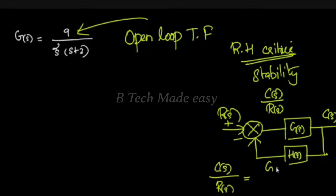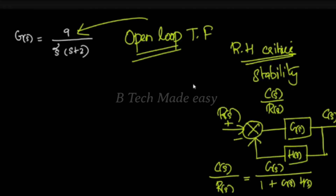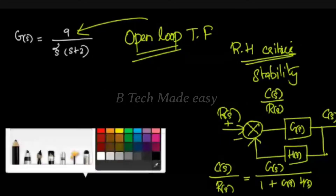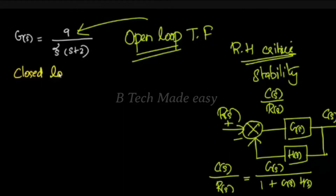That is, the forward function G(s) divided by 1 plus the product of G(s) and H(s). Now, this is the case where we have an open loop transfer function G(s). We need to convert G(s) to the closed loop transfer function.